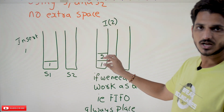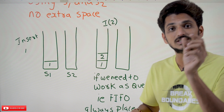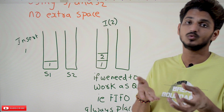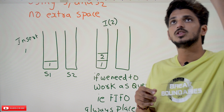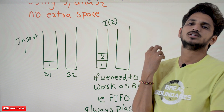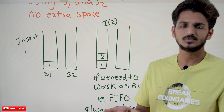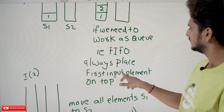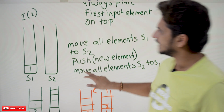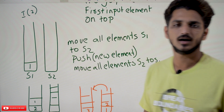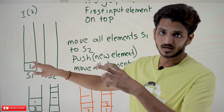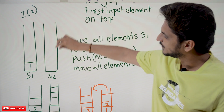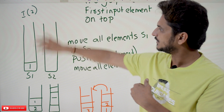That's why during insertion, you have to make sure that the first inserted element should be on the top of the stack — that is the logic we have to write. Always the first inserted element should be on the top of the stack, so that you can easily remove that first element and it works as a queue. How we do that? Whenever you want to insert the second element, first pop all the elements that are present in S1 and place them in S2.